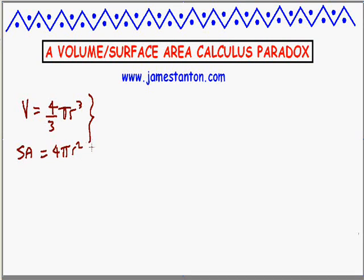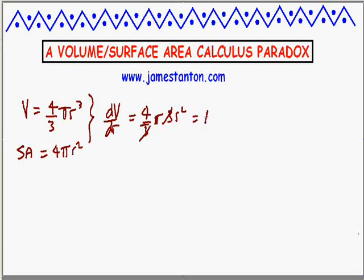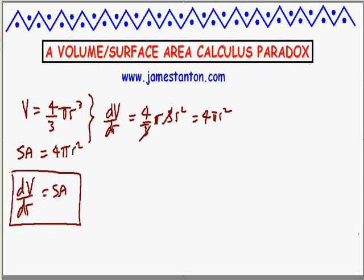But what a lot of people notice about these two forms is actually kind of curious. Obviously I'm thinking of r as a variable here, so I've written everything in terms of r. Look at the derivative of the volume formula with respect to r. dV/dr is going to be four-thirds pi times the derivative of r cubed, which is three r squared — the threes cancel — giving four pi r squared. It looks like the derivative of volume is actually surface area.